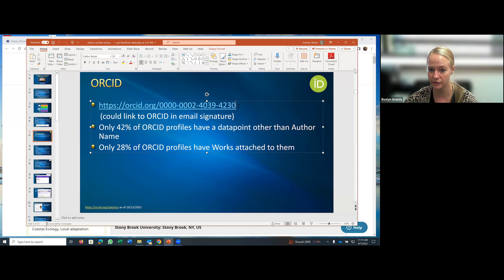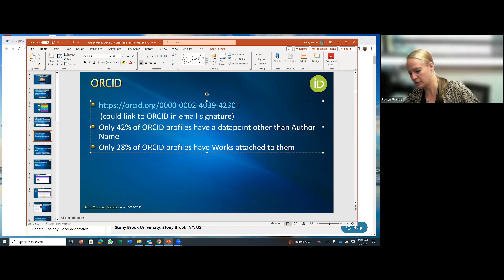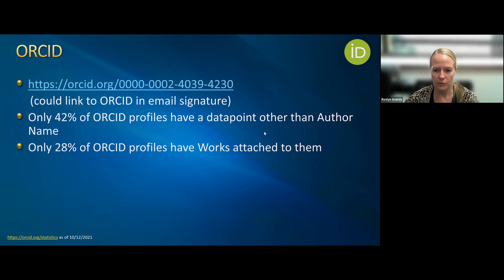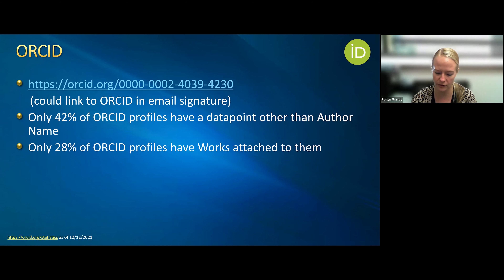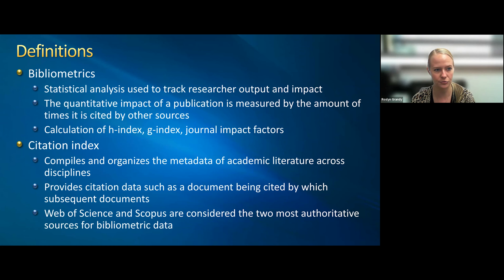If you want a quick link to all of your publications, just put your ORCID in your email signature. Because a lot of publishers require an ORCID, many profiles are just orphans out there — only 42% of ORCID profiles have something other than an author name, and only 28% have actual works attached. So there are a lot of unclaimed profiles, which will dilute the impact you're having. Make sure you claim your ORCID so you can start constructing your research story.